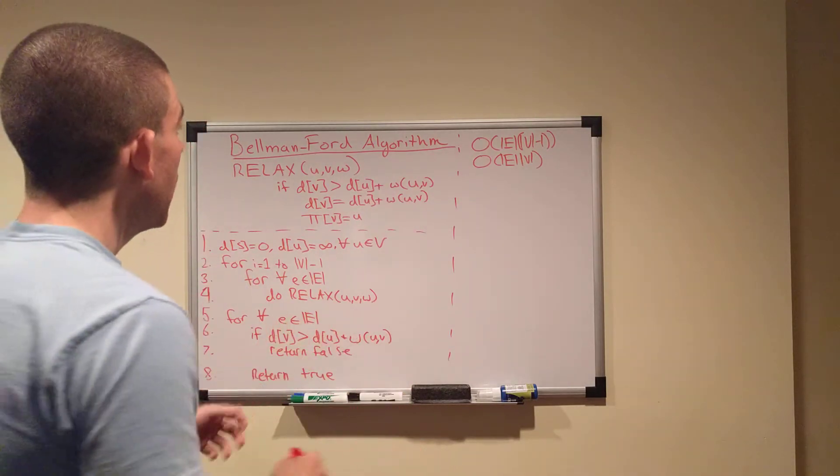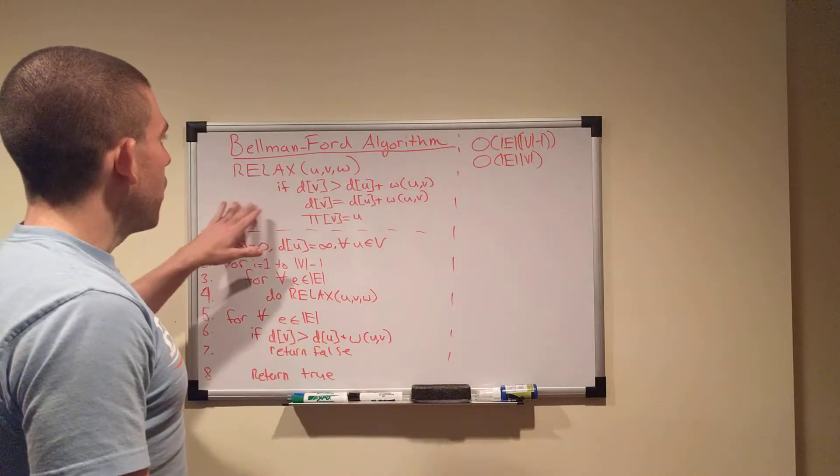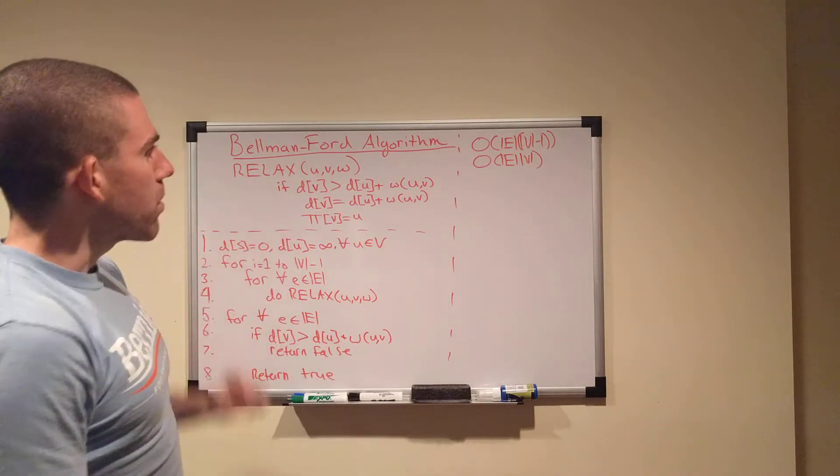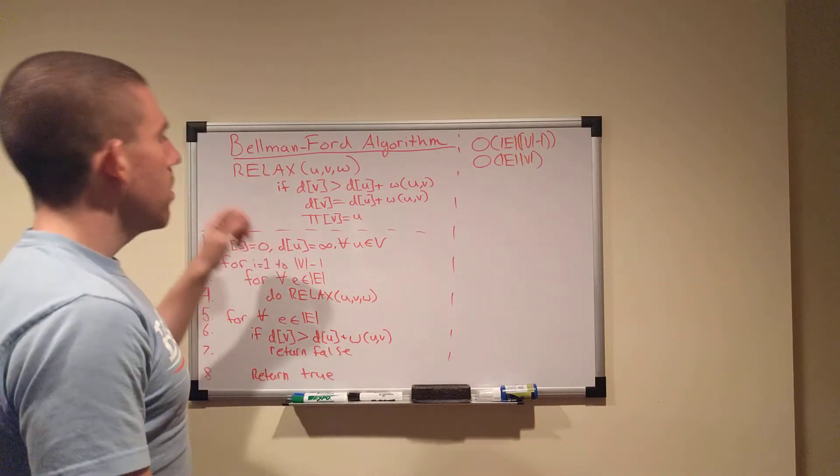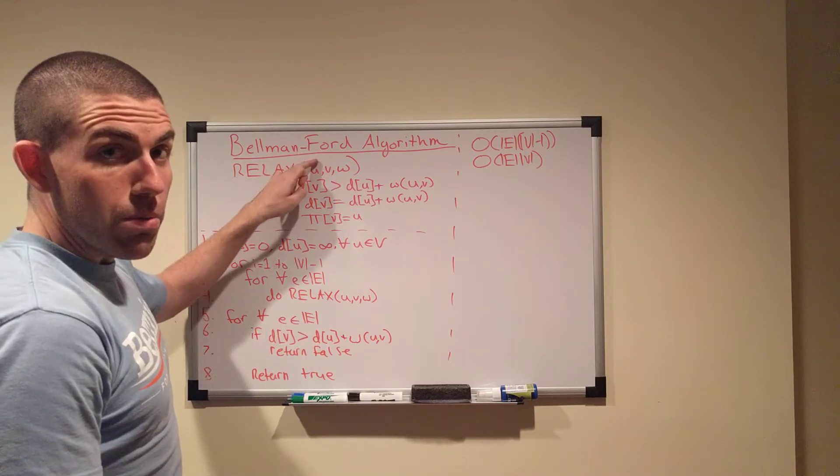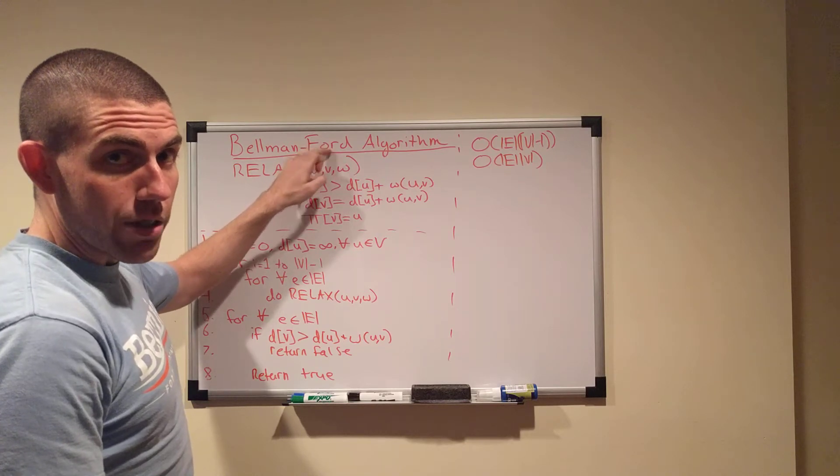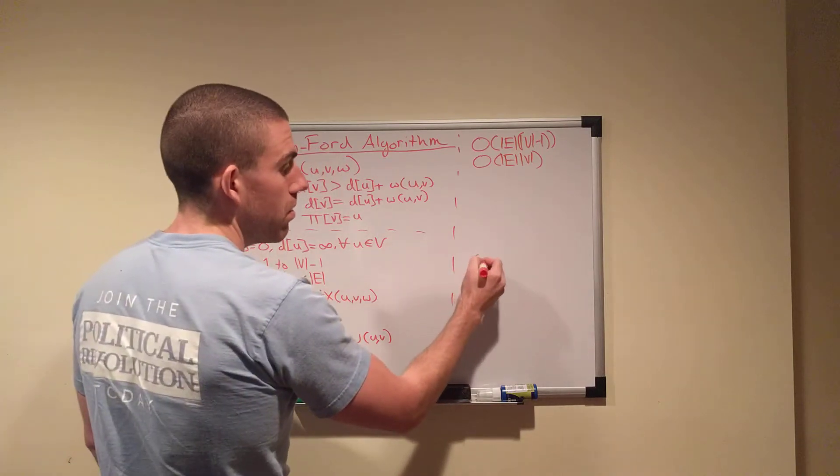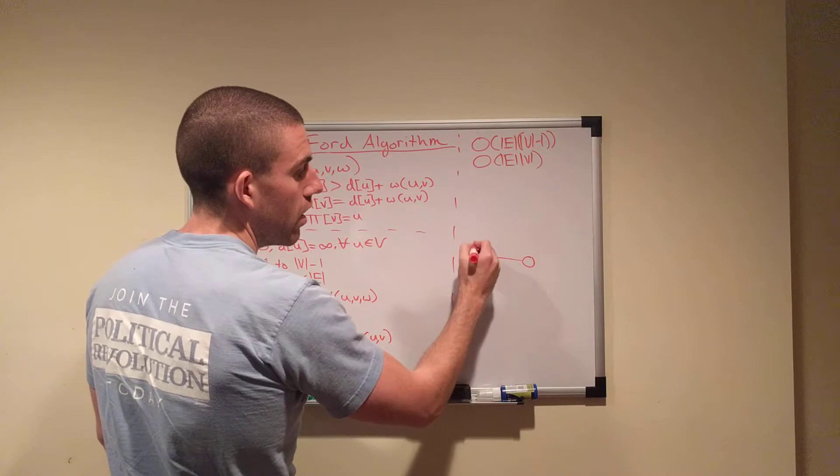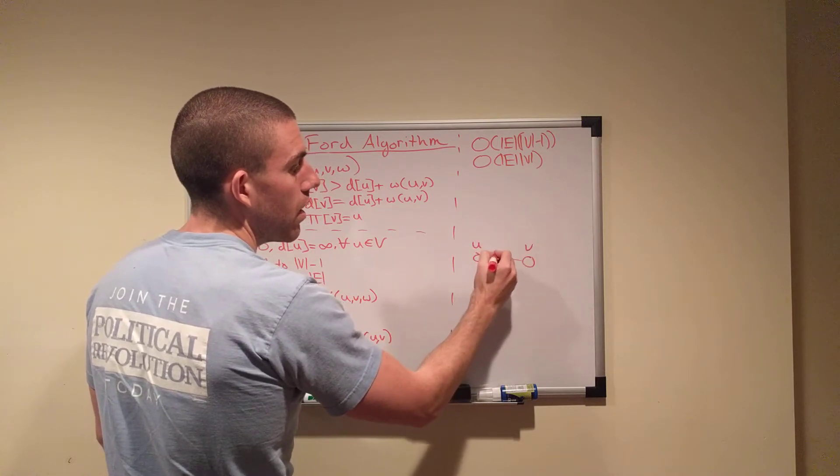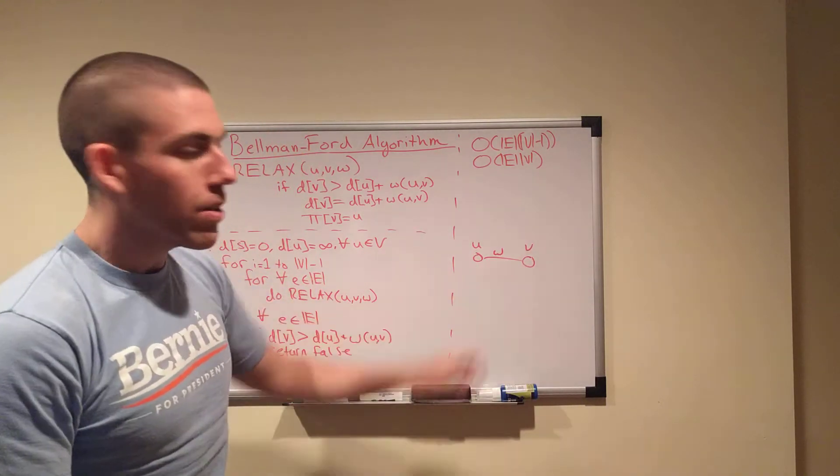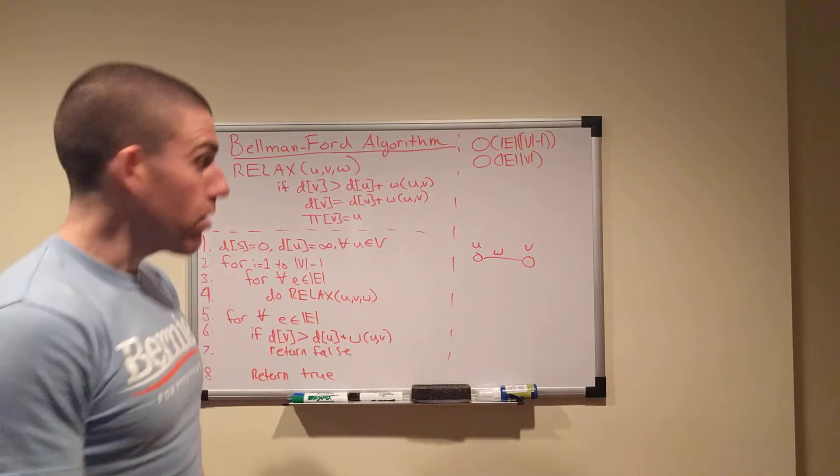But how does it do what it does? Well, it runs on the backbone of this procedure right here called RELAX, which takes in a vertex U, a vertex V, and the connecting edge weight. So, it takes in U, V, and the weight of the interceding edge. That's all.